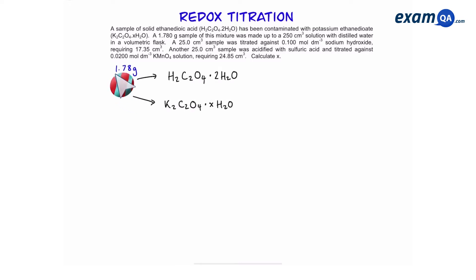We have a solid which has a mass of 1.78 grams and it is a mixture of two different compounds. We want to know the value of x in the potassium ethane dioate. So this is what happens to work out the value of x. The solid is first dissolved in 250 centimeters cubed of solution.